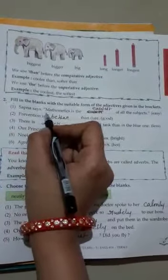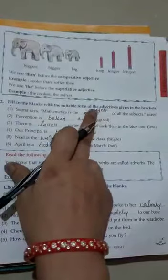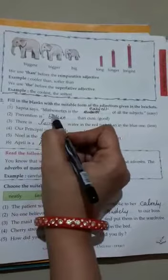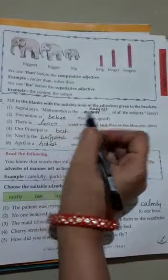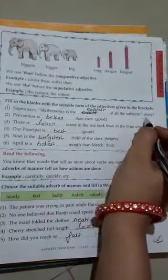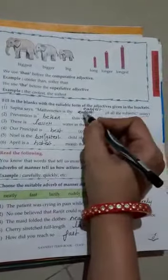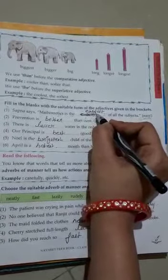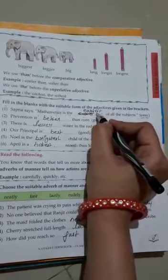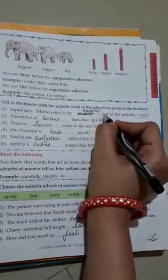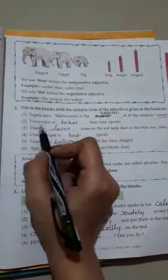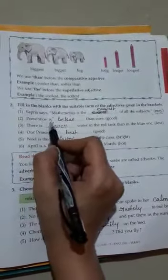First one: Sapna says mathematics is the [blank] of all the subjects. So what adjective form should we use? Easiest - E-A-S-I-E-S-T. Easiest of all the subjects.